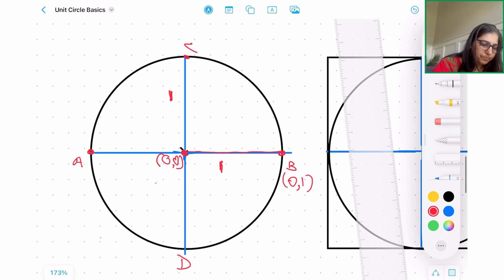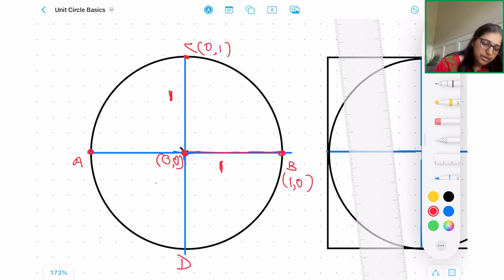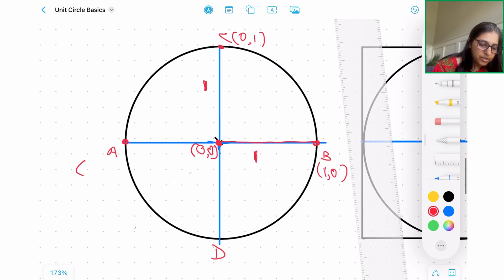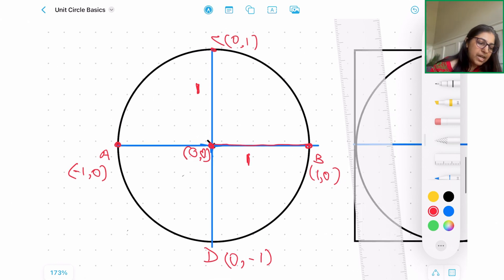B is going to be one comma zero. C is going to be zero comma one. For A, the value is going to be minus one comma zero. And finally, for D, the value of D is going to be zero comma minus one.